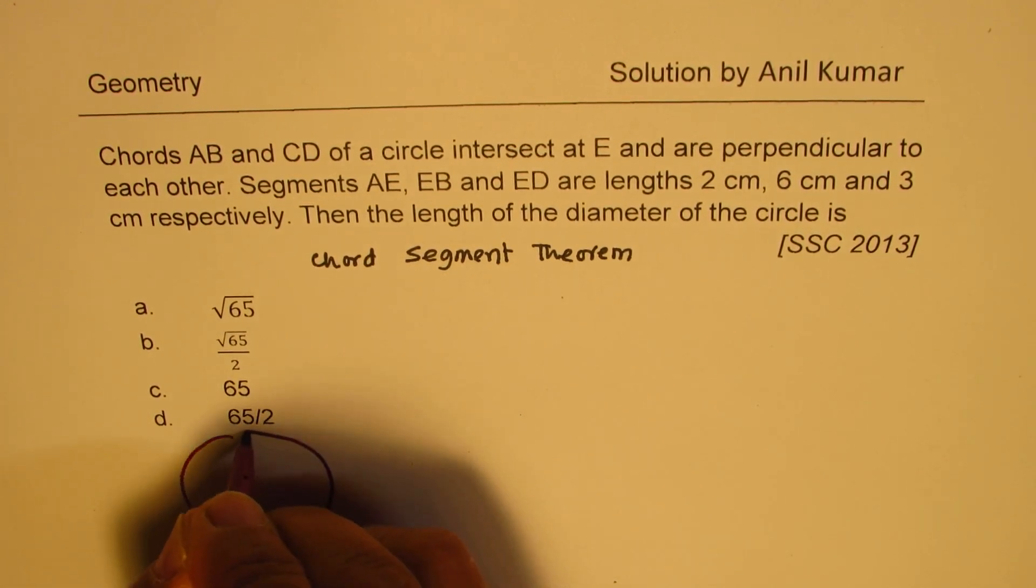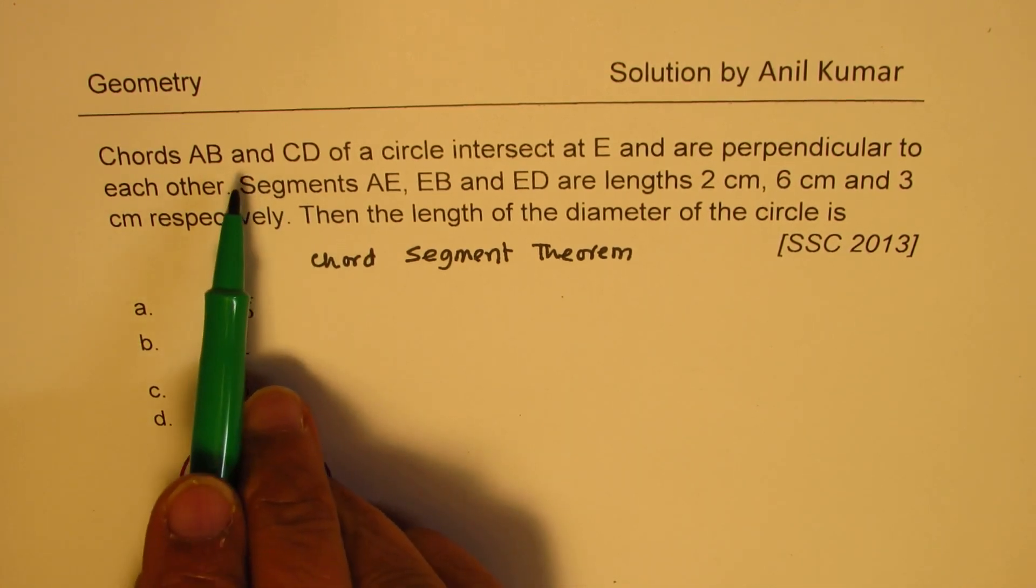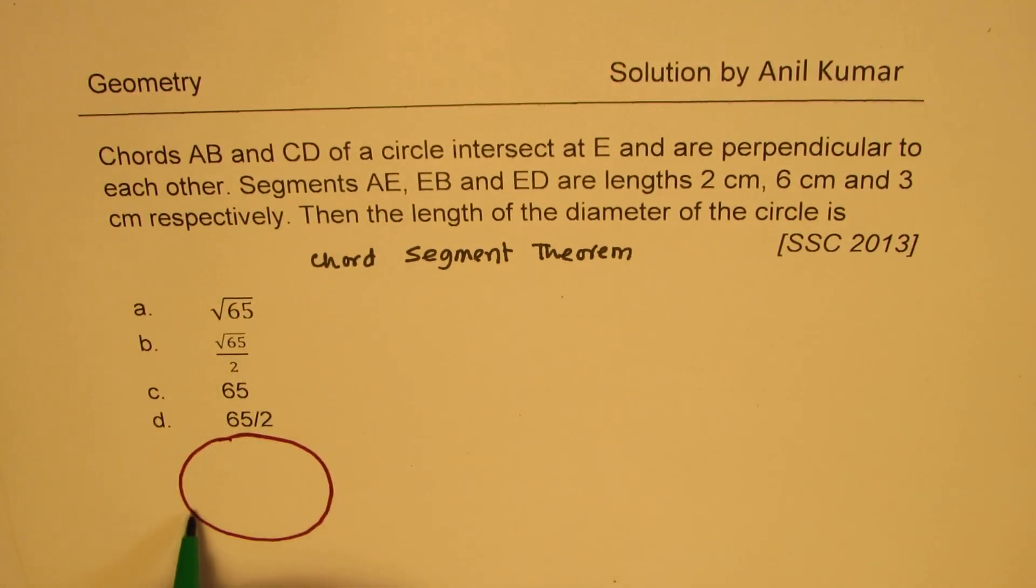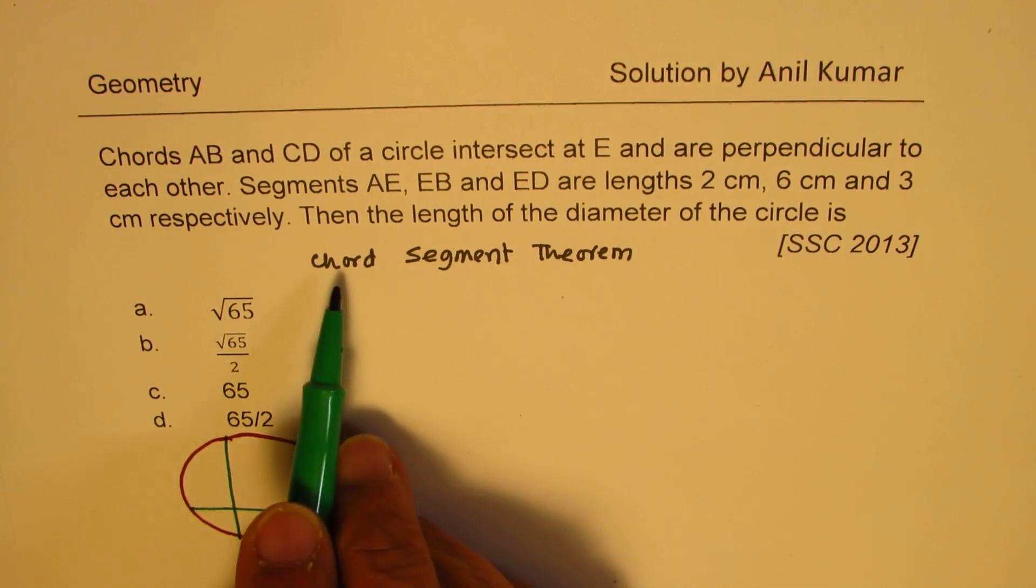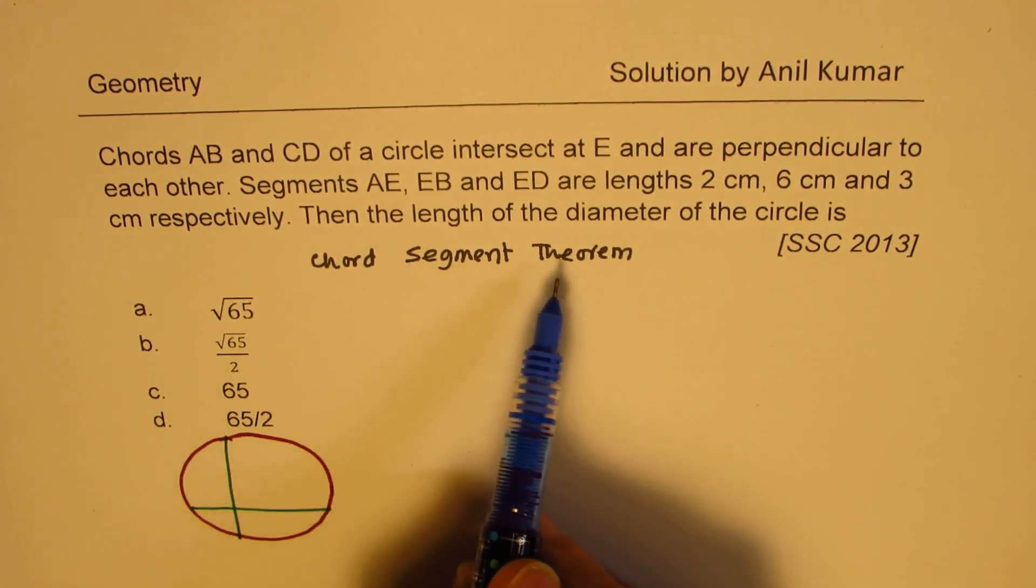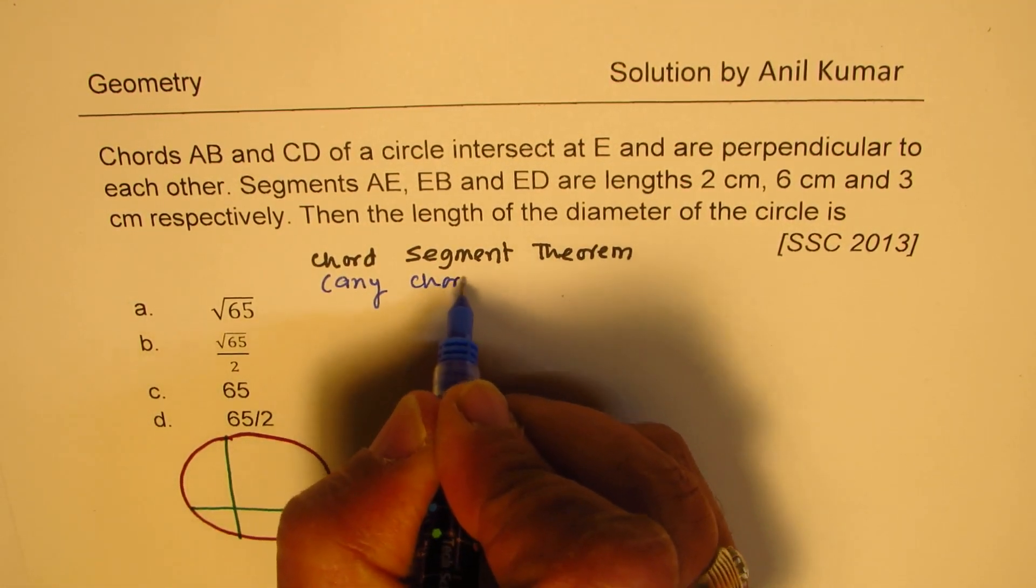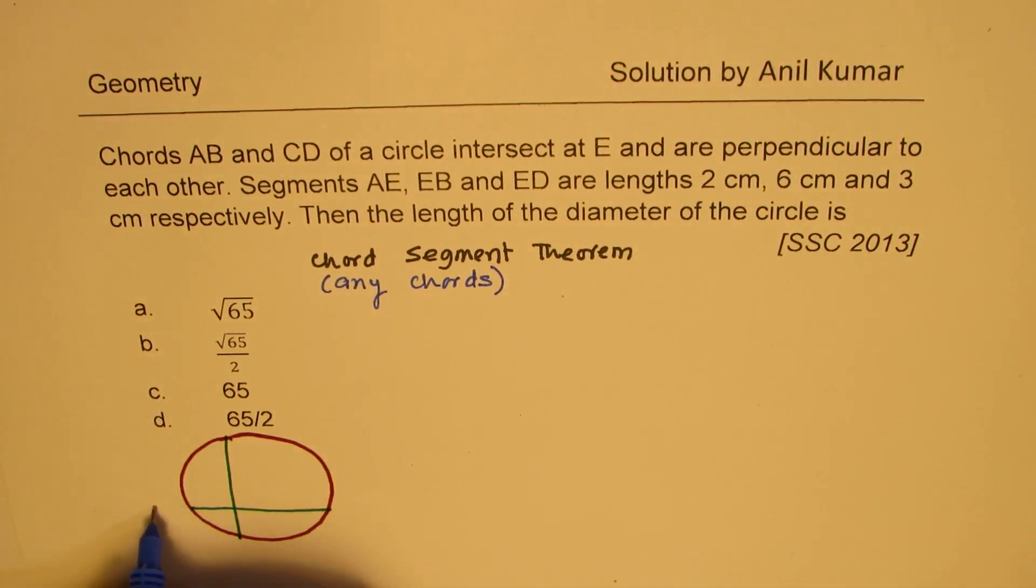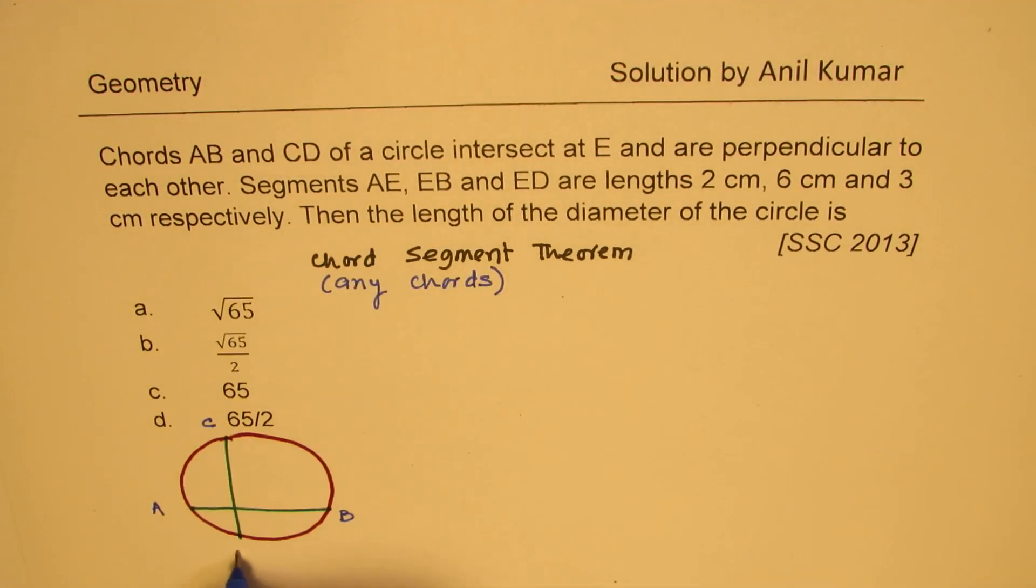So let's say we have a circle like this and we have two chords. Just because in this question we have perpendicular chords, I'll actually draw perpendicular chords. But normally for a chord segment theorem, they may not be perpendicular. Let's be very clear about it. So these chords may not be perpendicular for chord segment theorem. Now if I have a chord which is like AB and CD as said in the question, and if we have a point where they meet at E, let's say this is the point E.